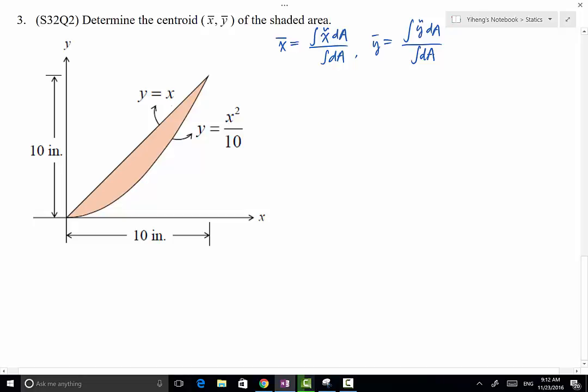I'm going to choose the integration element to be a vertical strip at an arbitrary location x. In other words, from here to here, that is x. So for this differential element, its width is simply dx. Its height is determined by this location minus this location, so this equals y1 minus y2. And y1 equals x minus y2 equals x squared over 10.